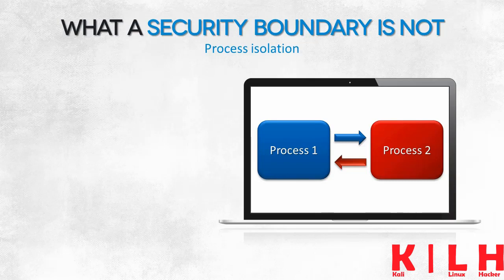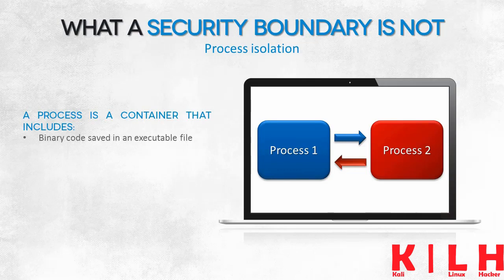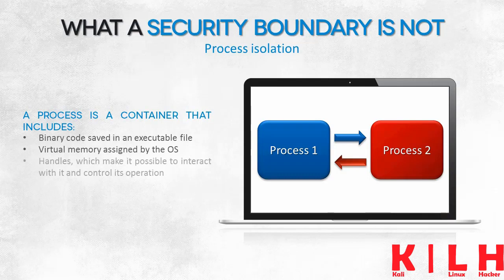What's the meaning of a process to begin with? The system task manager uses the term incorrectly. A process is a binary code saved to a file. A part of the virtual memory addressed to a system and code metadata are allocated to an executable code. The metadata includes mostly handles that enable the process to communicate with external processes. A process also involves a security context that describes it. These elements constitute a process as such.